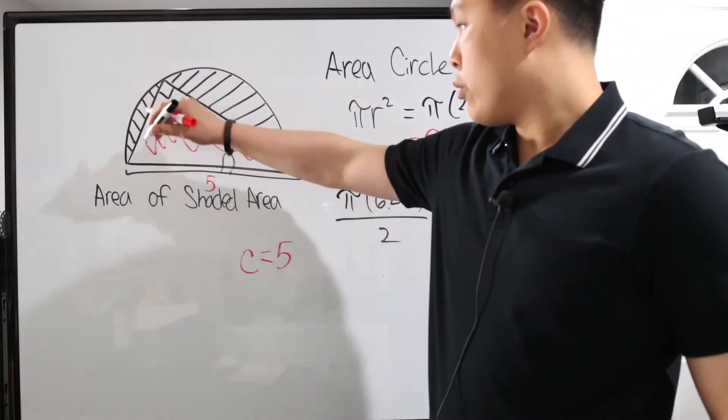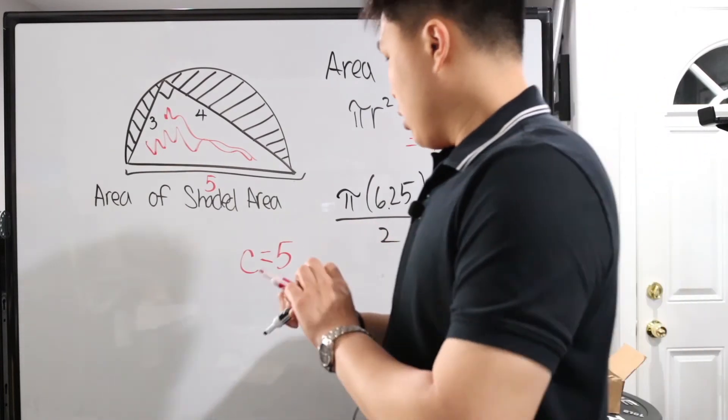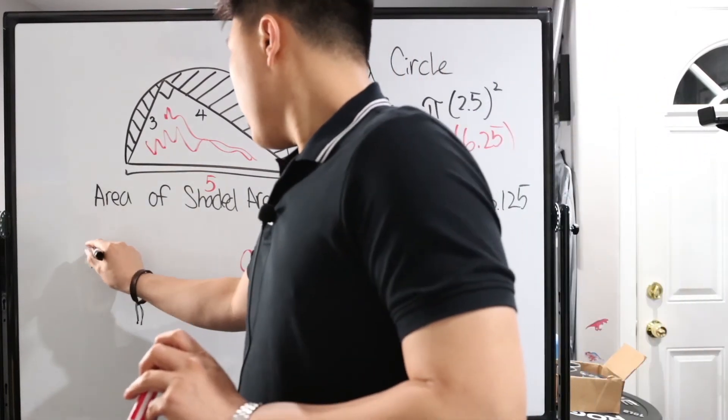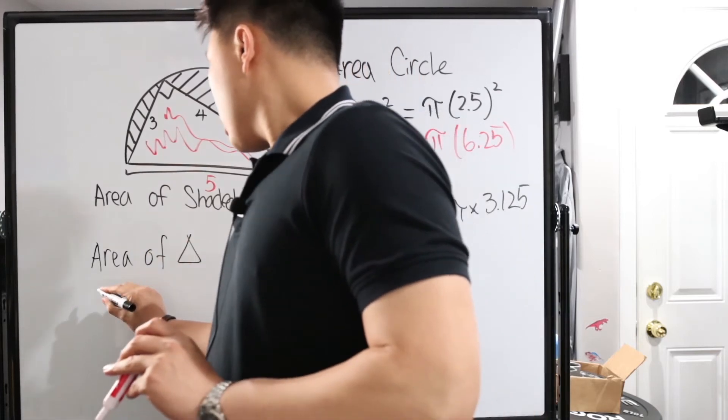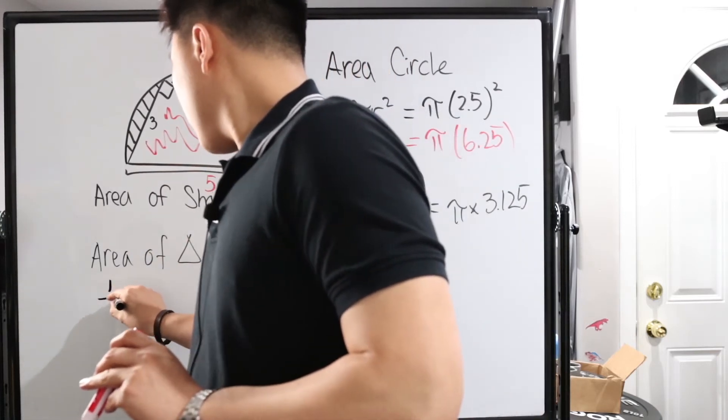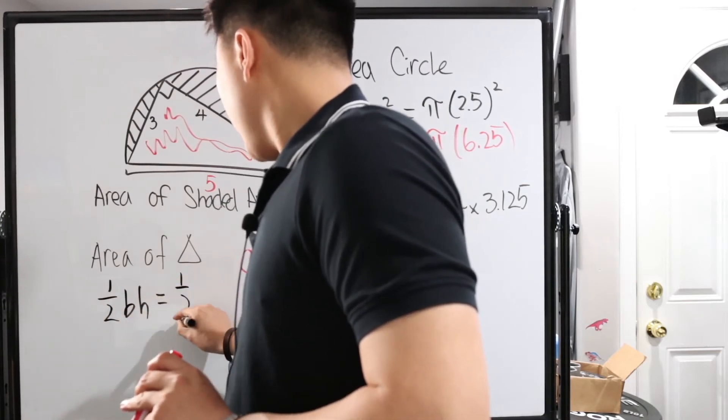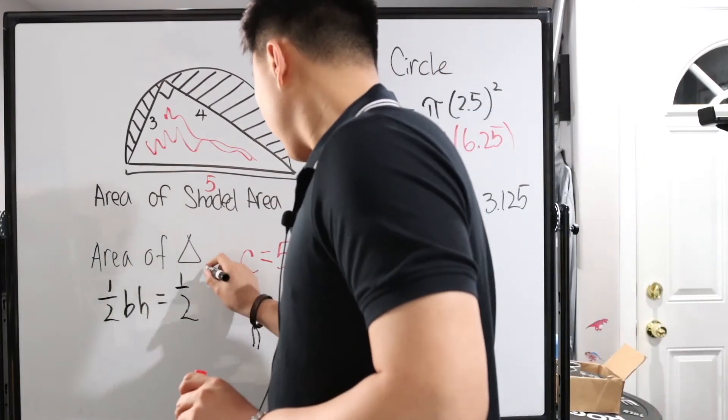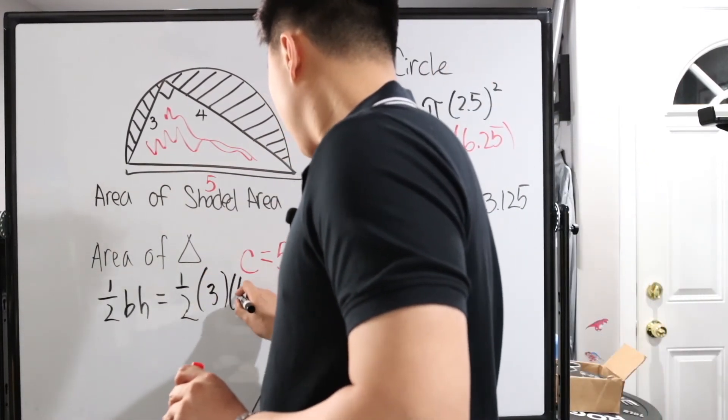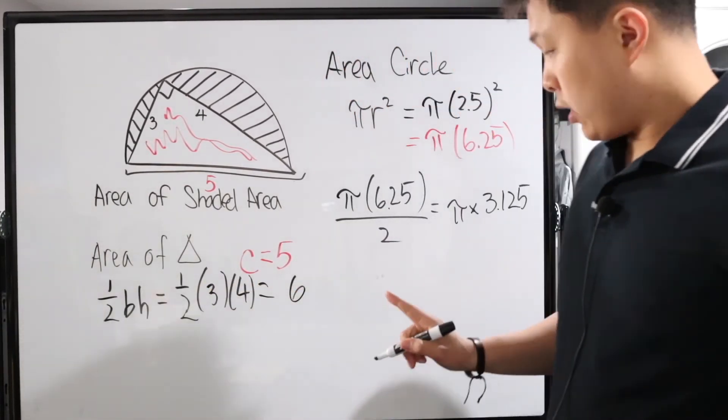The last thing we need is to get rid of the red part, basically that triangle right there. Remember, area of triangle is just one half base times height, which in this case is just one half. Base is three, height is four. So one half, three times four, which is 12 times one half, which is going to be six.